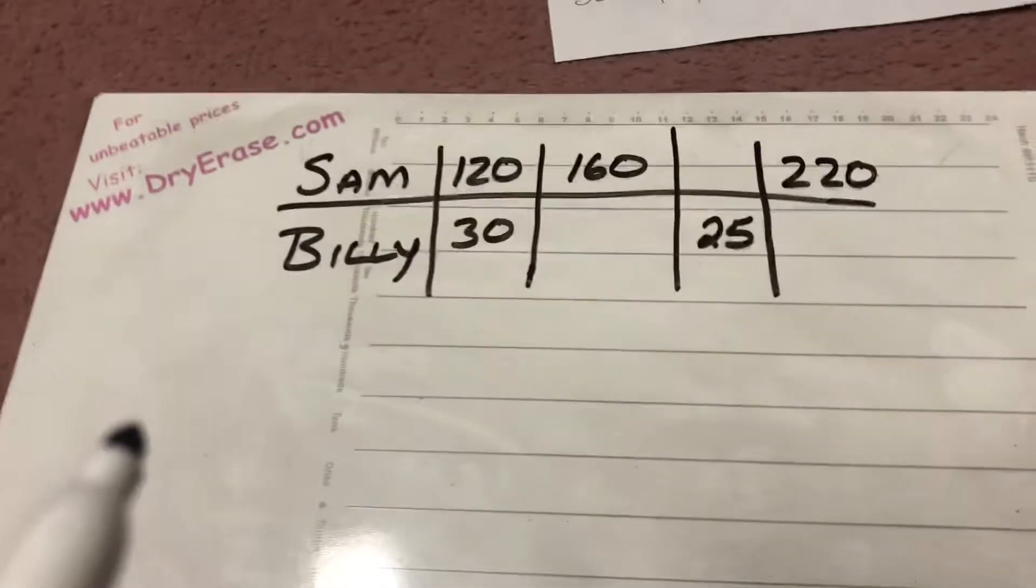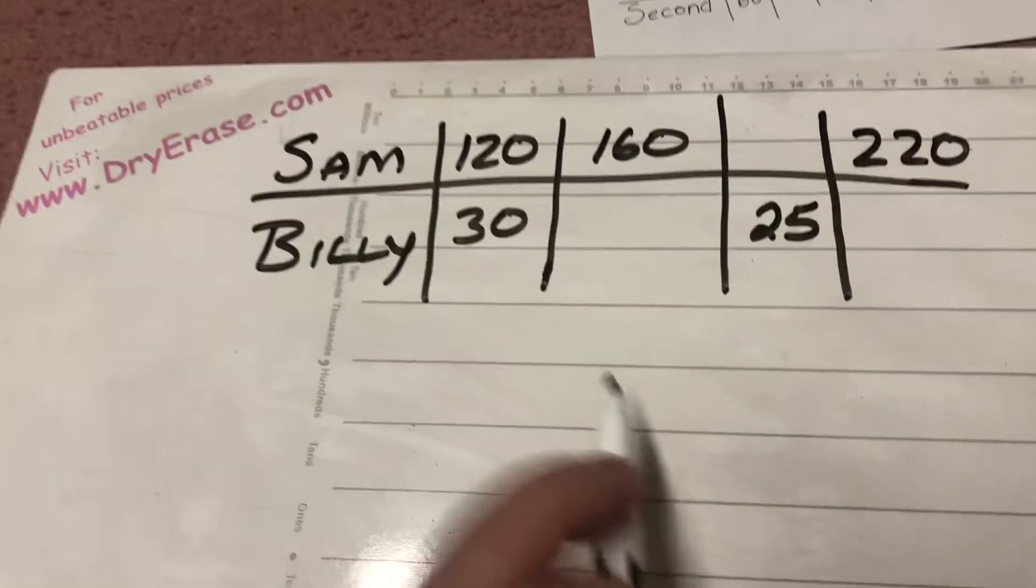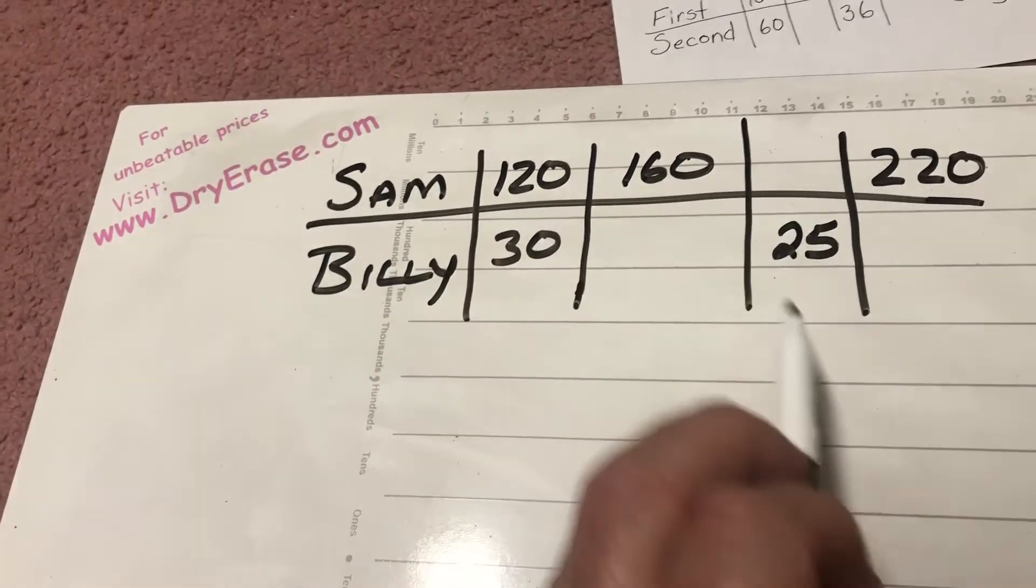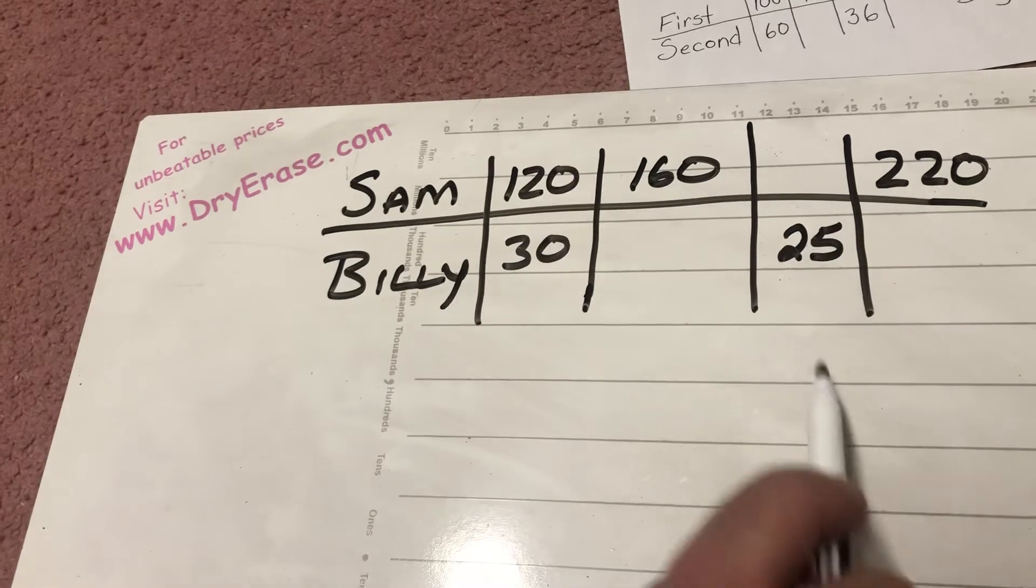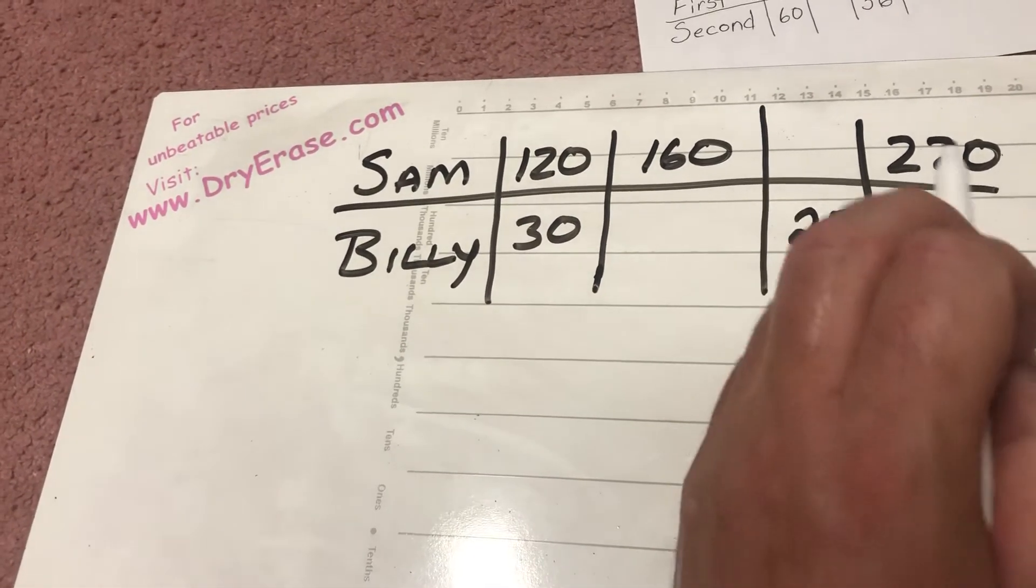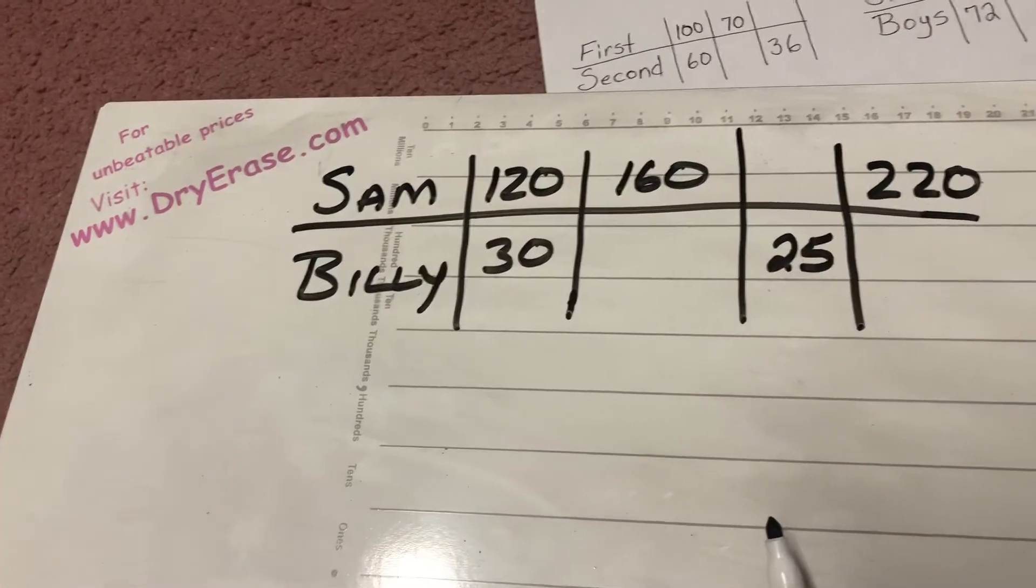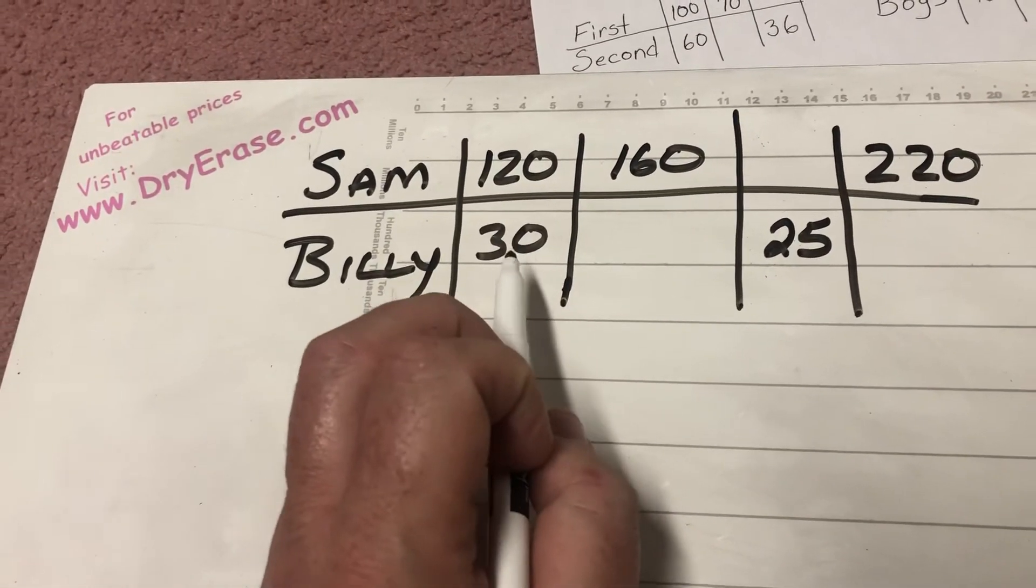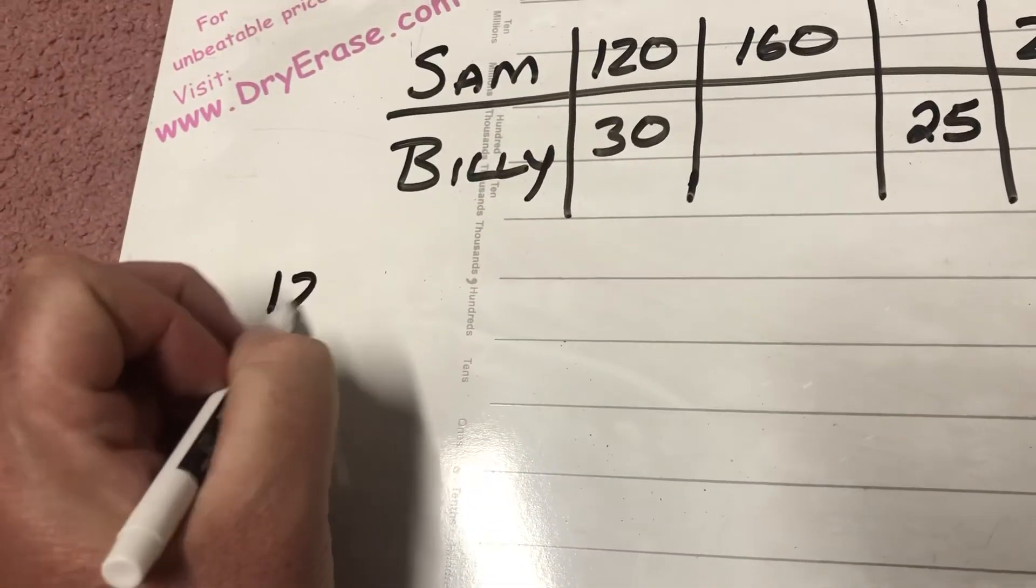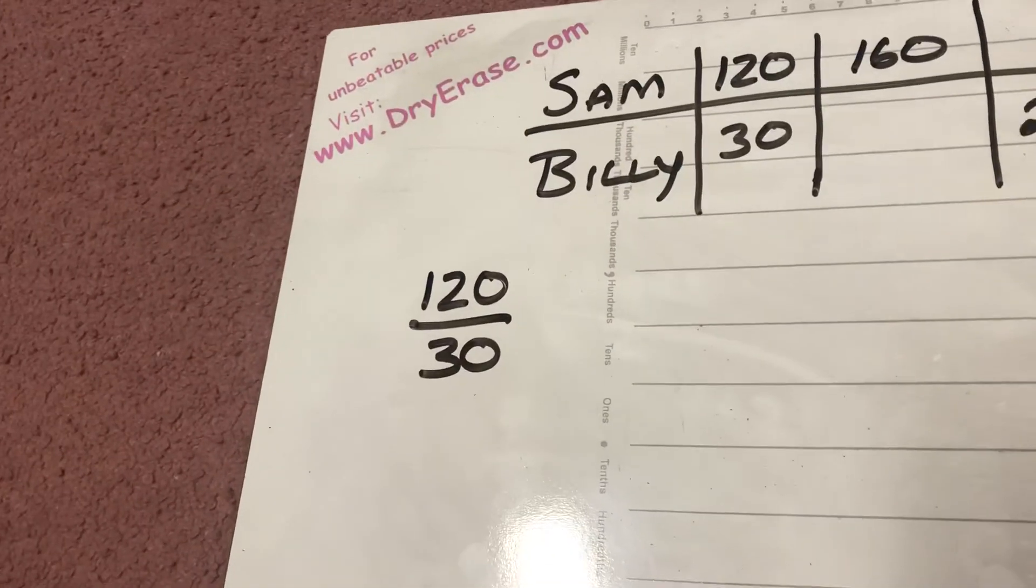This was just a little bit different. Same thing, but sometimes there's just a different approach that we have to have. Sam and Billy had something here. When Sam had 120, Billy had 30. Sam has 160, we've got to figure out how many Billy has. Billy has 25, we need to figure out how many Sam has. Sam has 220, we need to figure out how many Billy has. So I ask myself, well, okay, if Billy has 30 and Sam has 120, I can see, well, I'm going to make that 120 over 30, and I'm just going to simplify that.